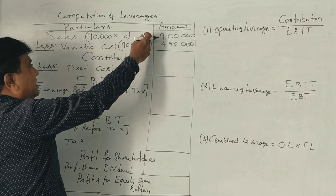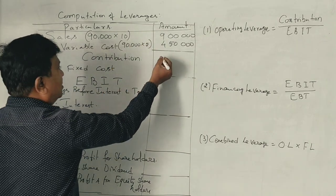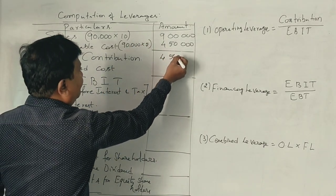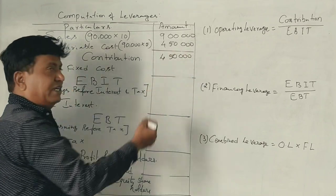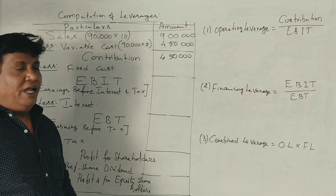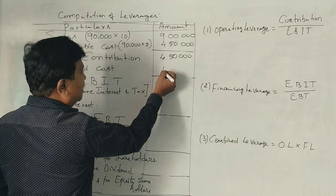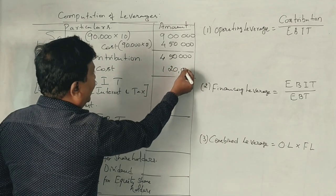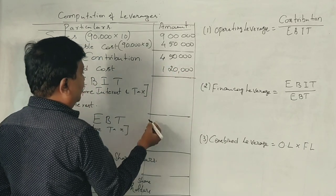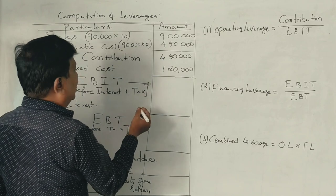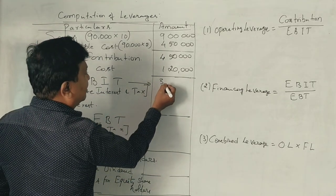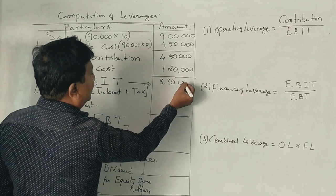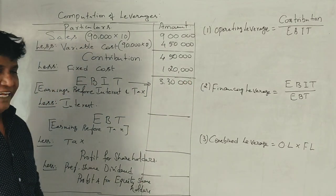From sales, if we deduct the variable cost of Rs. 4,50,000, we get Rs. 4,50,000 as contribution. The fixed cost given is Rs. 1,20,000. So the EBIT is Rs. 3,30,000.